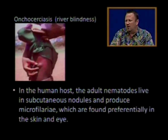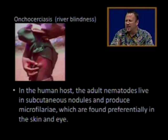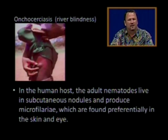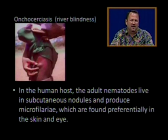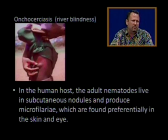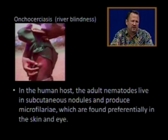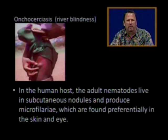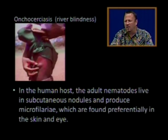In the human host, the adult nematode lives in subcutaneous nodules and produces microfilariae, which are found preferentially in the skin and the eye. These worms go into the body, become adults, live in nodules under the skin, and make babies — those worm larvae are called microfilariae.